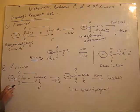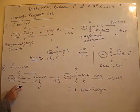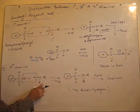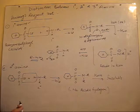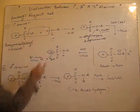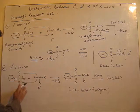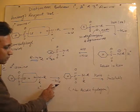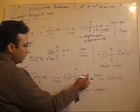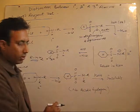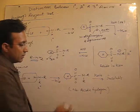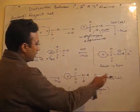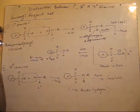When secondary amines are treated with benzene sulfonyl chloride, in secondary amines there is only one replaceable hydrogen. The reaction takes place to form N,N-dialkyl benzene sulfonamide, in which there is no acidic hydrogen. As a result, this compound is insoluble in KOH.